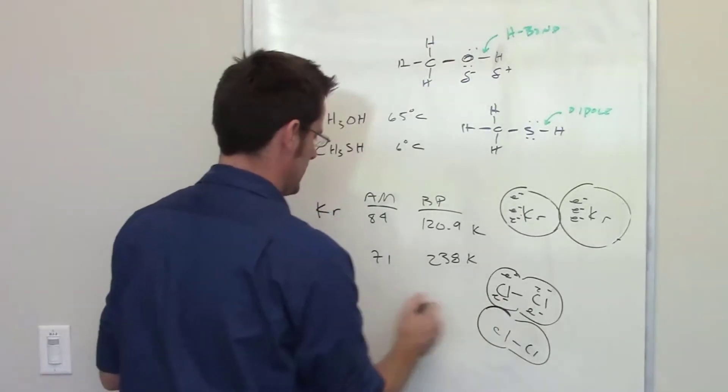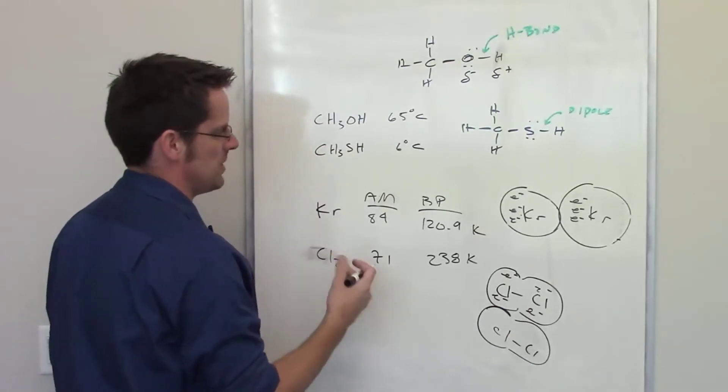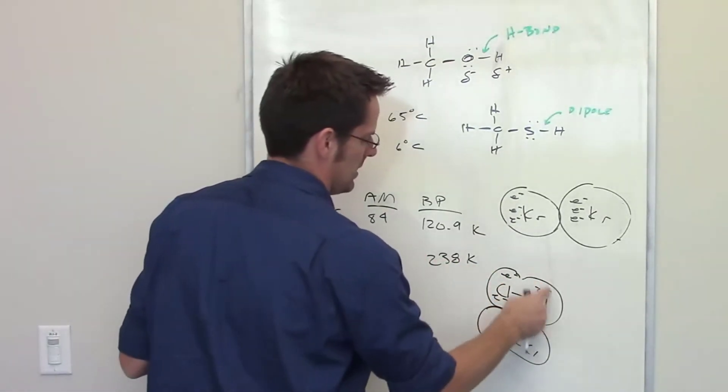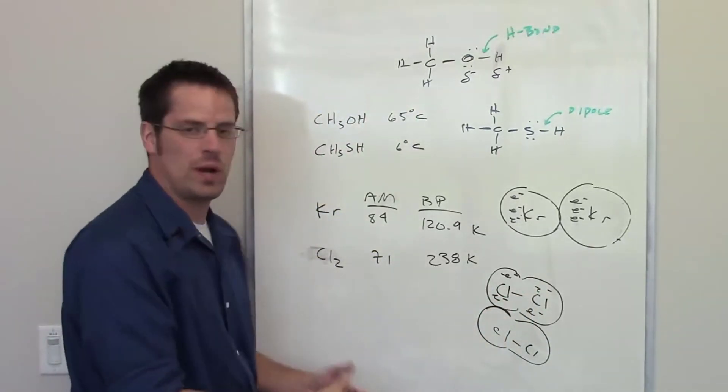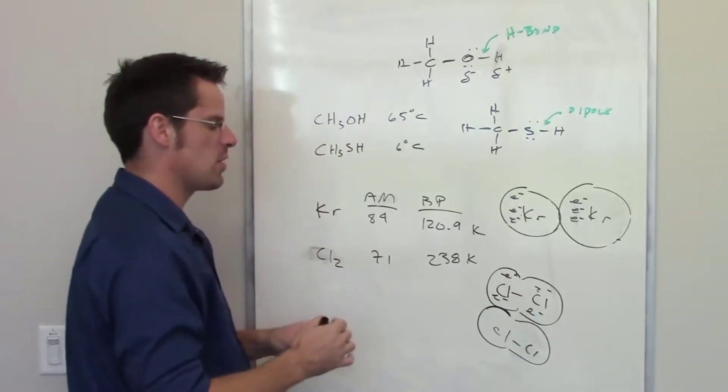Another argument that's given is that chlorine has this higher Z-effective than krypton, which means that the electrons inside these orbitals will feel the attraction to the protons in the nuclei of the chlorines much more intensely, and therefore be much more swayable or manipulable as another chlorine molecule comes on.